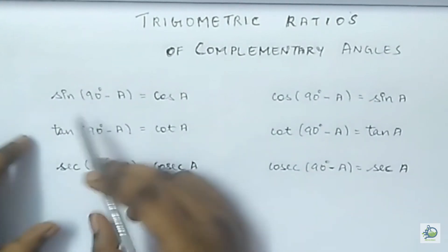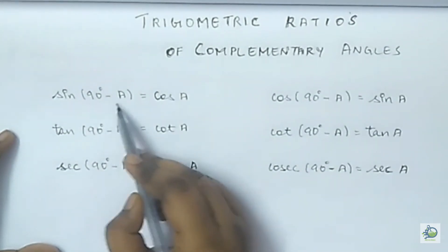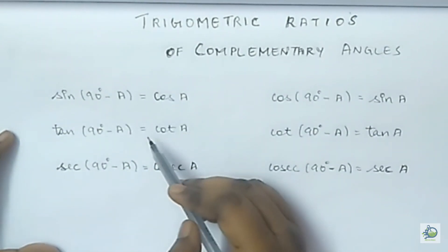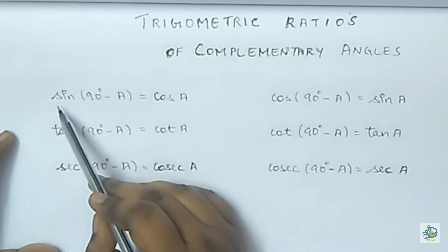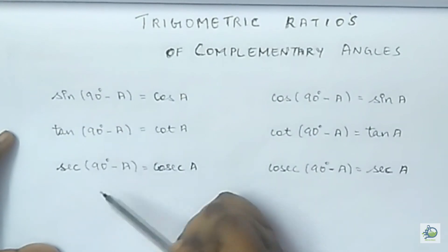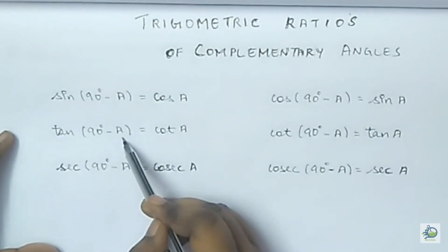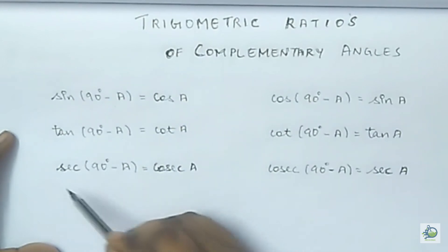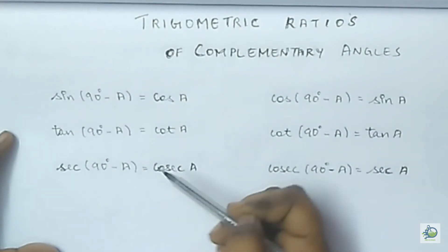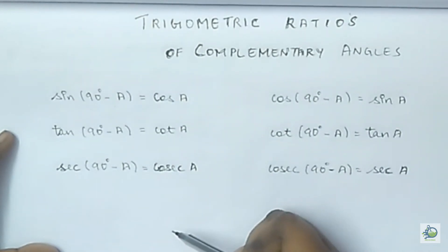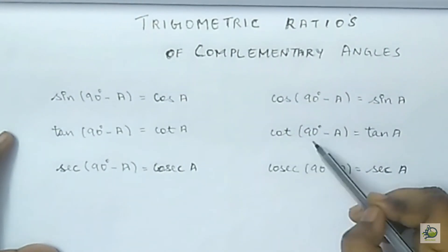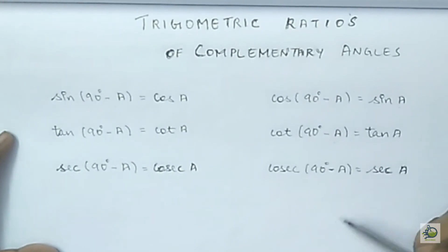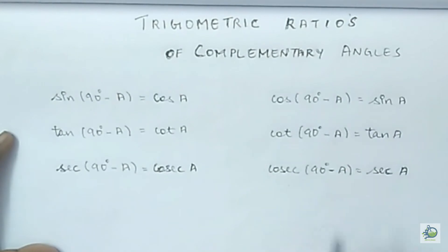Sin(90° − A) can be written as cos A, and cos A can in turn be written as sin(90° − A). Similarly, tan(90° − A) can be written as cot A. Cos(90° − A) can be written as sin A. Cot(90° − A) can be written as tan A. And cosecant(90° − A) can also be written as secant A.